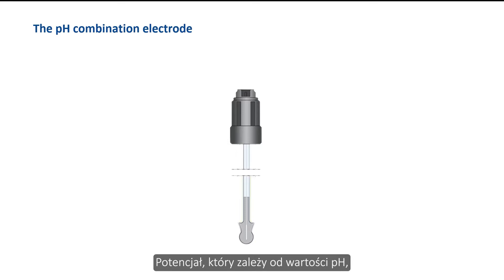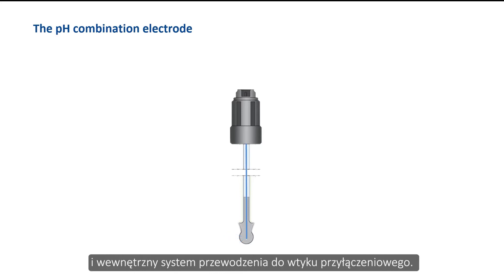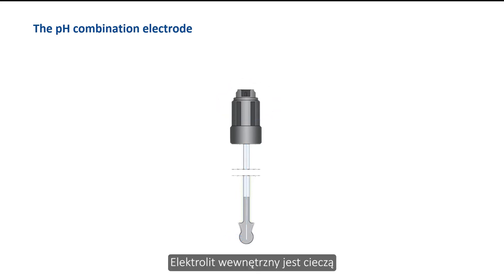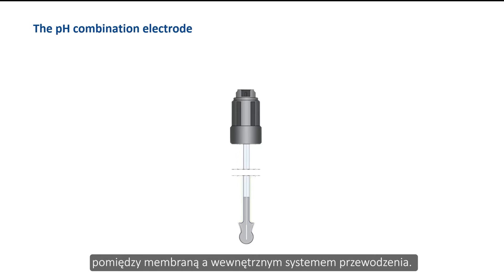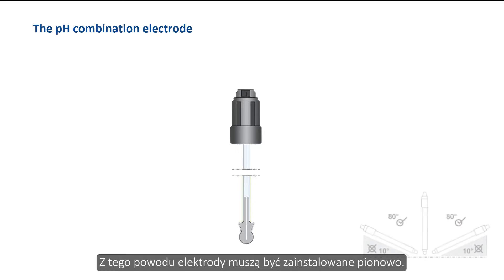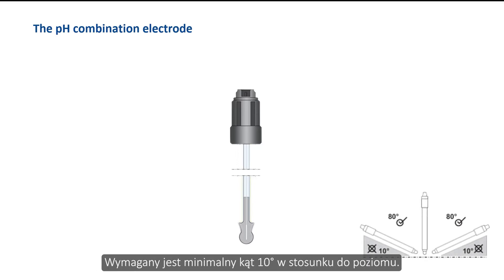The potential which depends on the pH value is led via the inner electrolyte and the inner conduction system to the connection plug. The internal electrolyte is liquid and is responsible for the connection between the membrane and the inner conduction system. For this reason, upside-down measurements are not possible with combination electrodes — a minimum angle of 10 degrees to the horizontal is required.